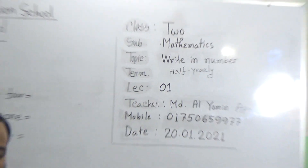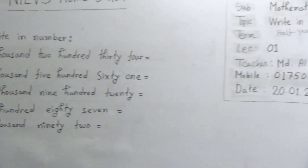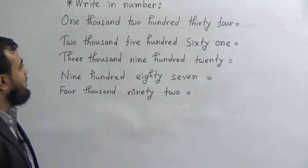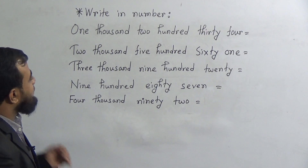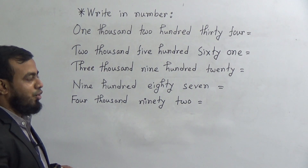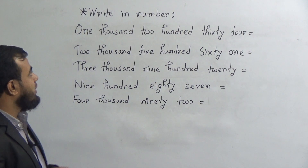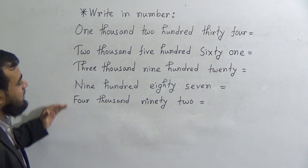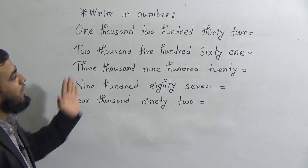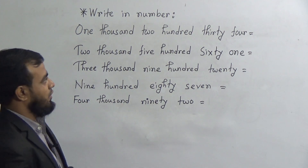Dear students, you have already learned in the previous class — that means in class 1 and in junior class 1 — how to write in numbers. Today in the first class, you have no homework. Now look at the board. I have written down 5 numbers here and you have to write them down in numbers.